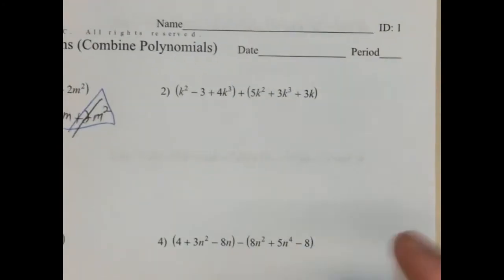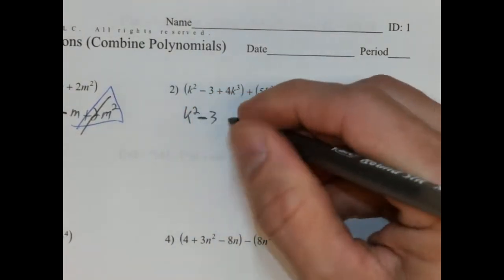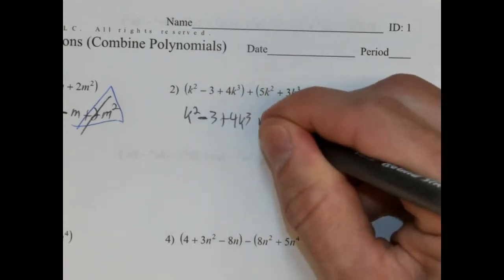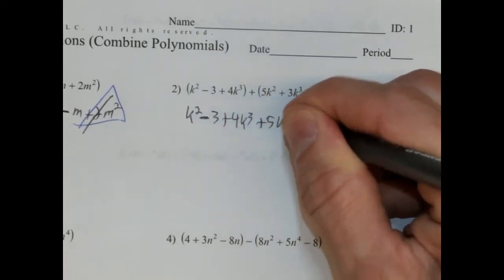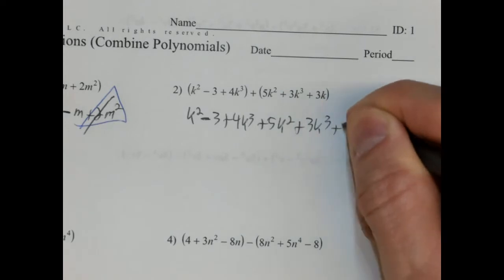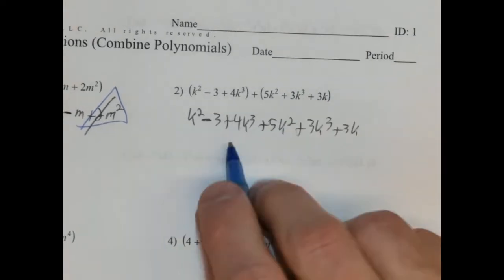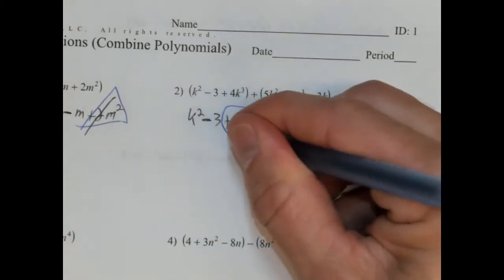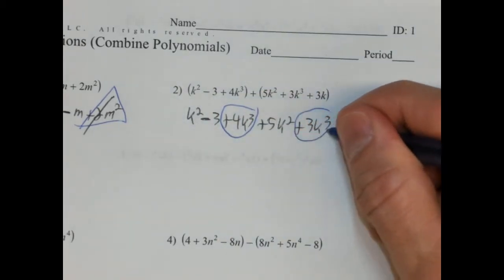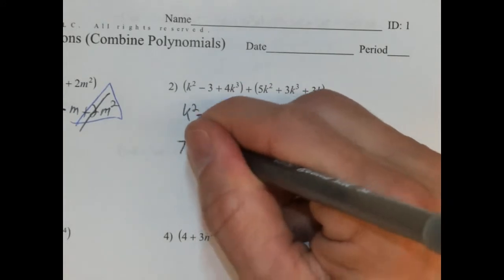Number 2. Same thing — let's rewrite it. So k squared minus 3 plus 4k cubed plus 5k squared plus 3k cubed plus 3k. Highest exponent — we have cubed. So 4k cubed, positive, and then plus 3k cubed. Both positives. So 4 plus 3 is 7, so 7k cubed.